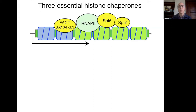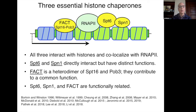Our focus has been on three essential histone chaperones: SPT6, which Hanukkah mentioned; Spt1 (SPINDOC); and FACT. I'll be talking about those today. These have been studied since the last century. They all interact with histones directly, they all co-localize with transcribing RNA polymerase II, although interestingly only SPT6 has been shown to directly interact with RNA polymerase II.